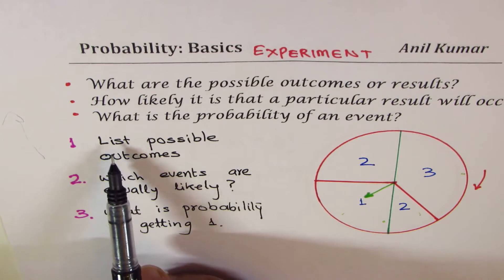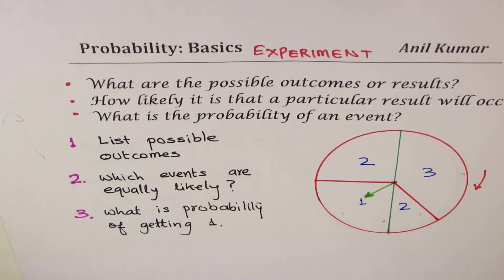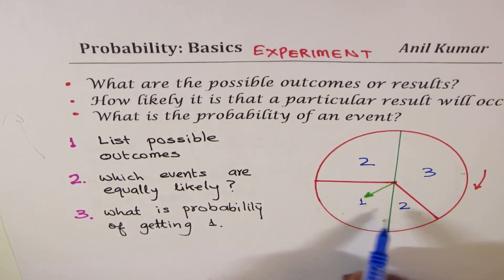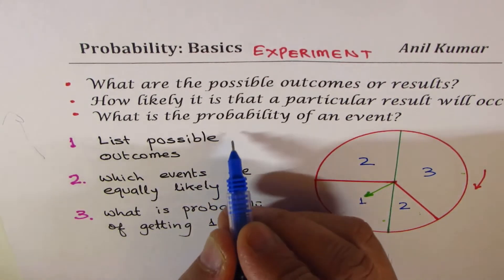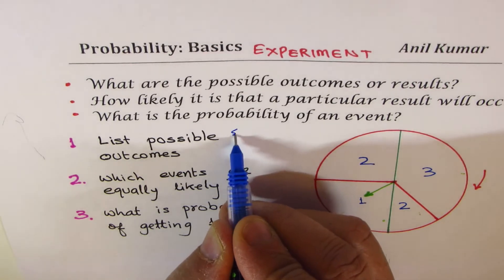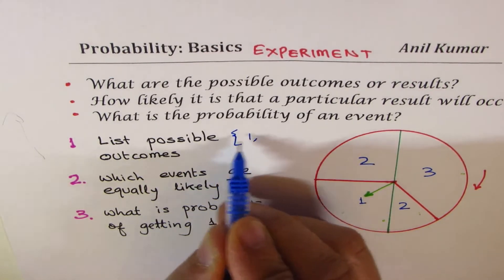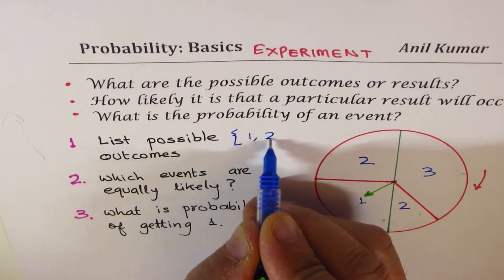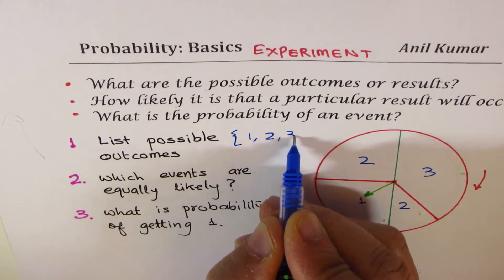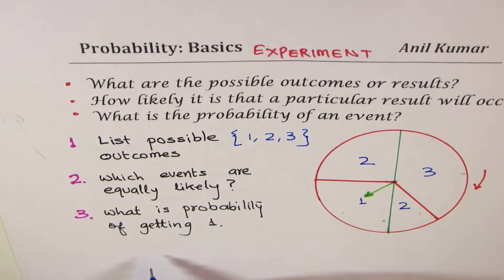The very first question is to list possible outcomes. In this particular spinner, what are the possible outcomes? The numbers 1, 2, and 3 are the possible outcomes, written in curly brackets as {1, 2, 3}.